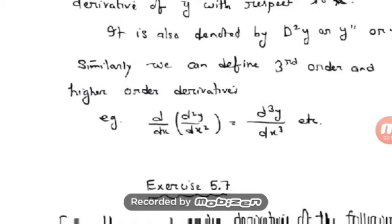First, see the question and decide which method of differentiation to use to get the first derivative — that is the first step. Do the derivative, then simplify the answer, and again differentiate that simplified answer to get the second order derivative. For the second differentiation also, you can use any method of differentiation.